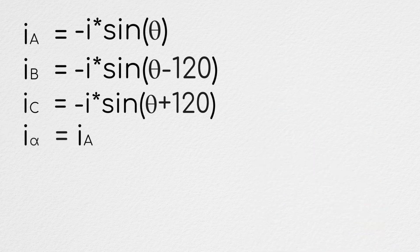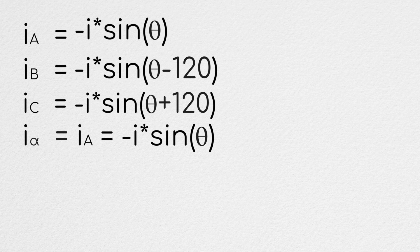Because it's just equal to the current in a, our alpha current is equal to negative i times sine of theta.